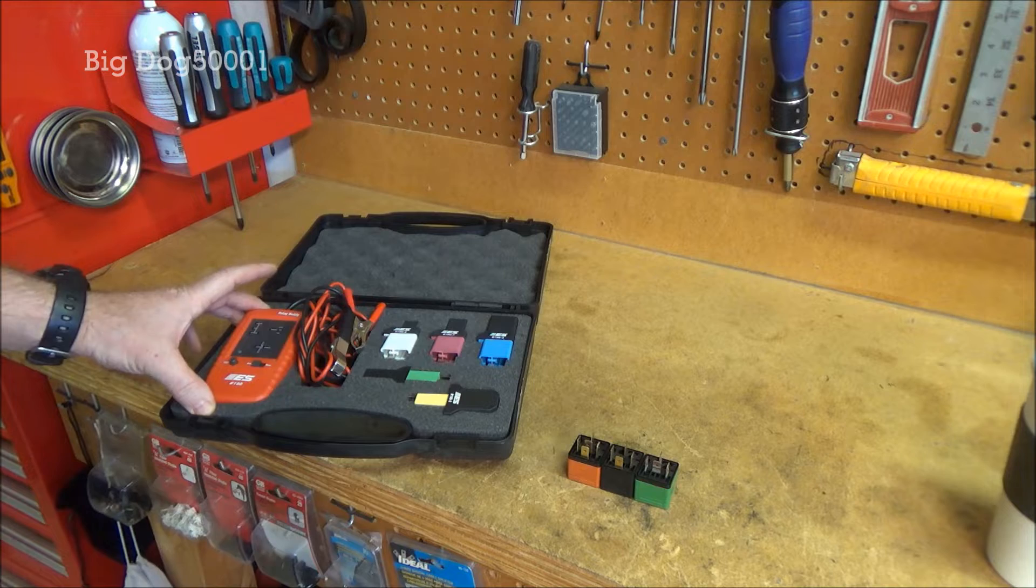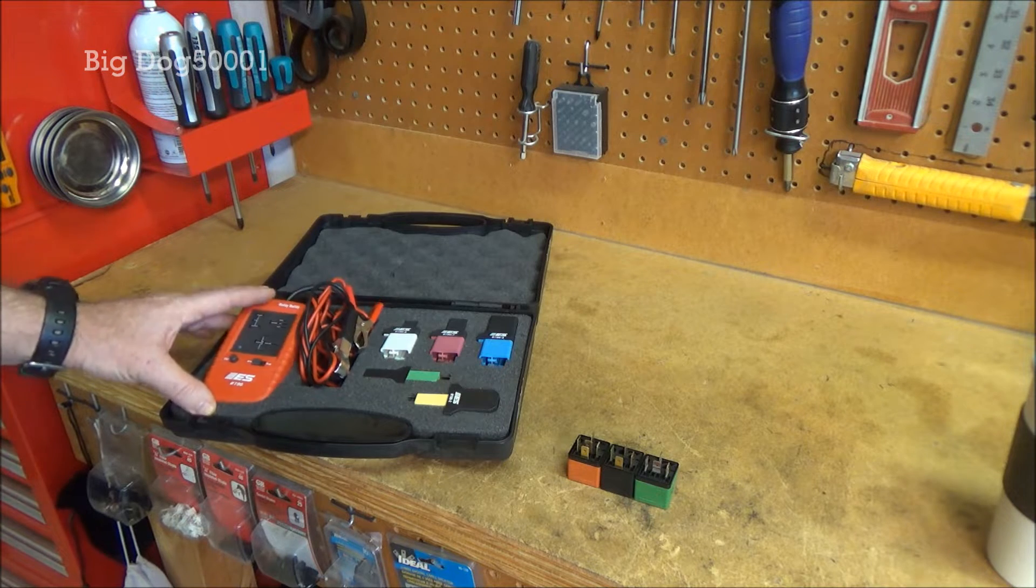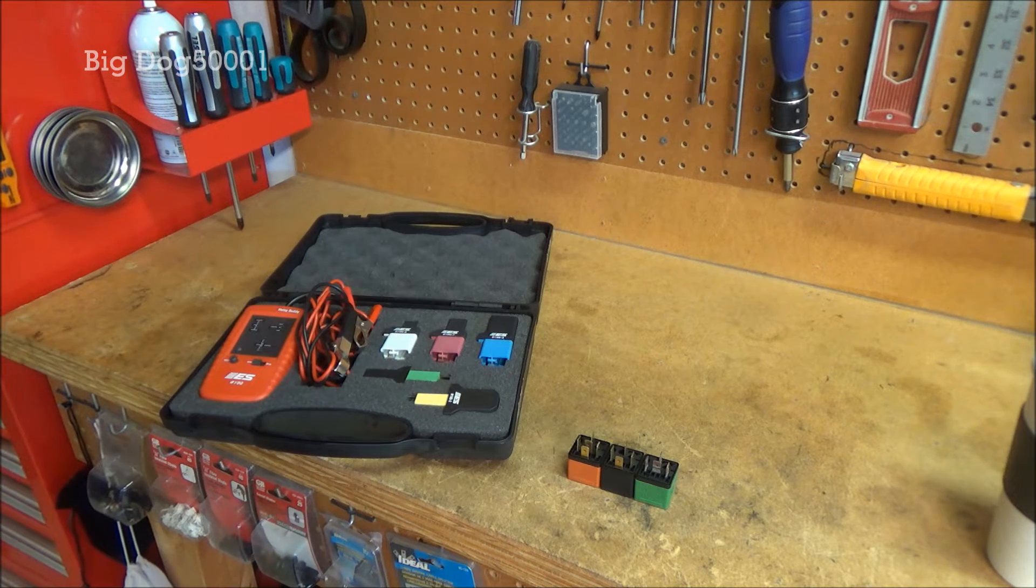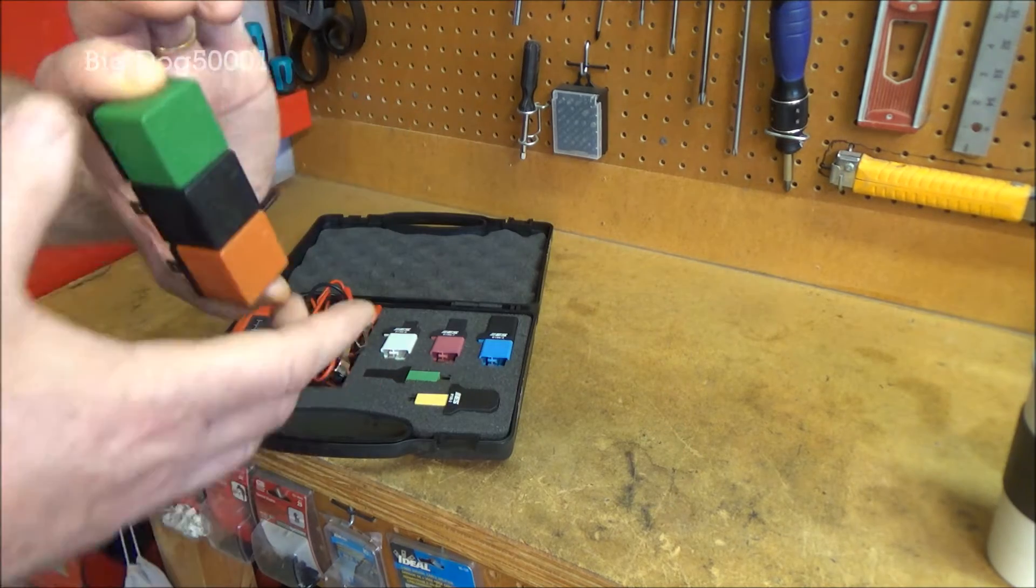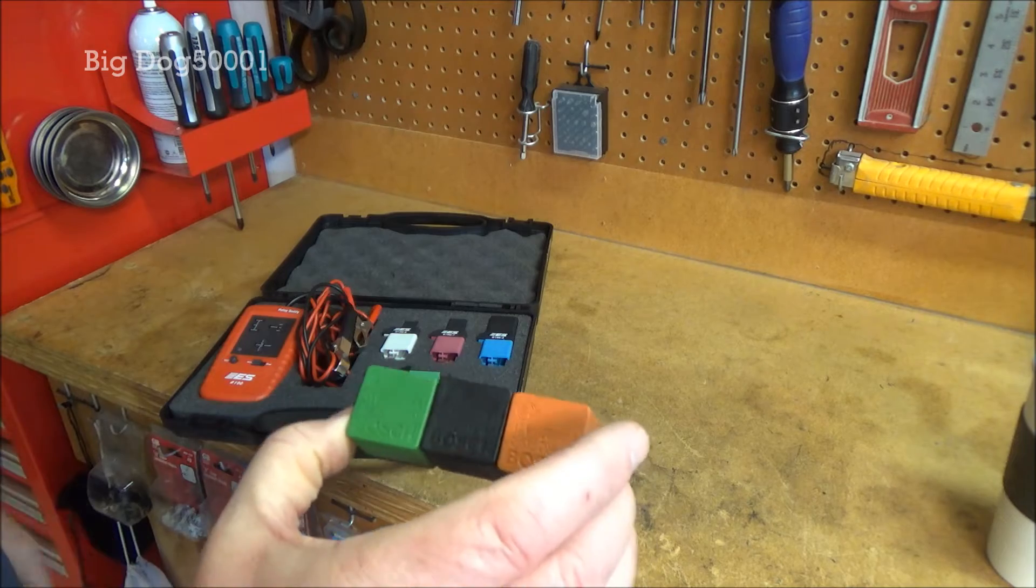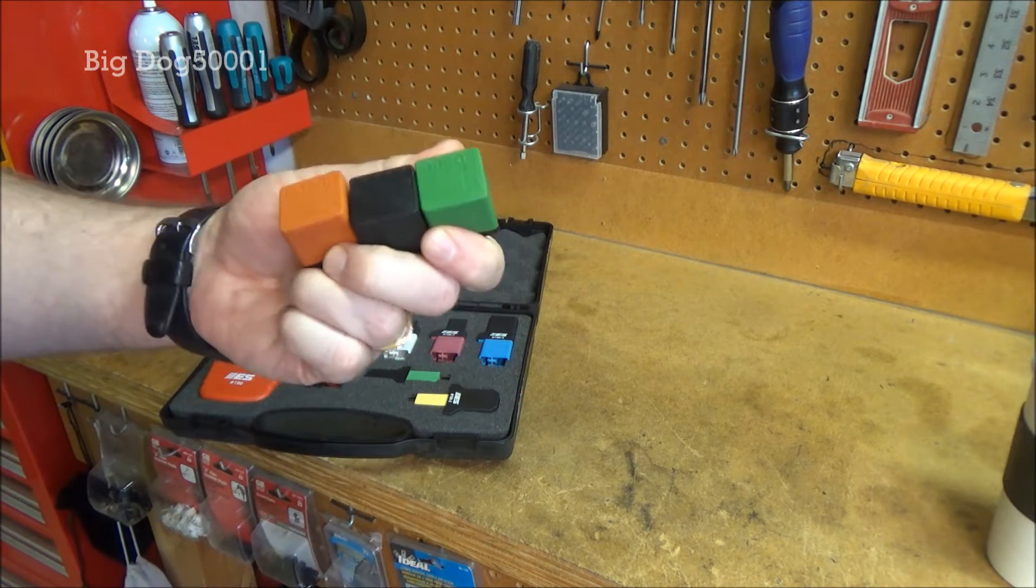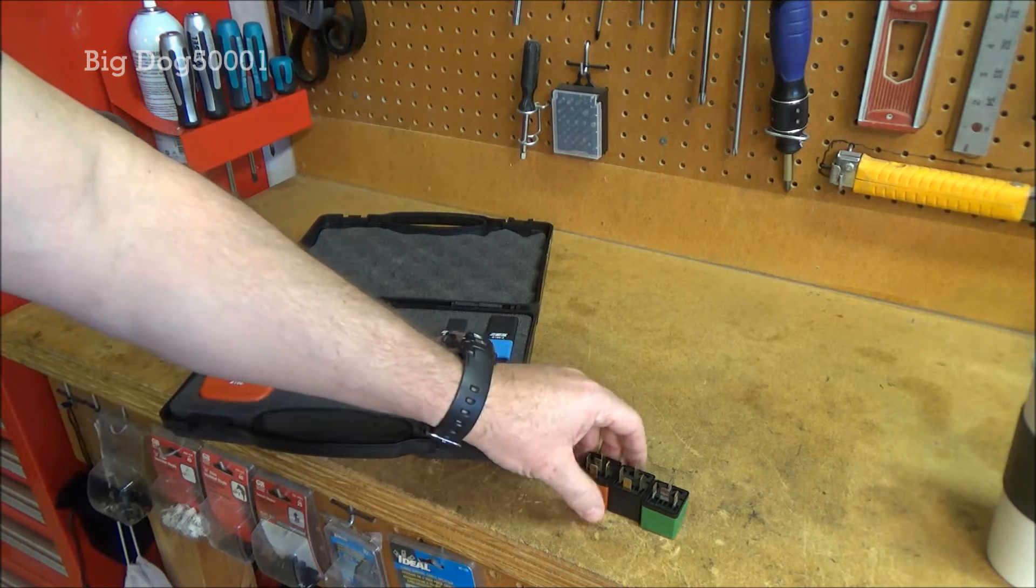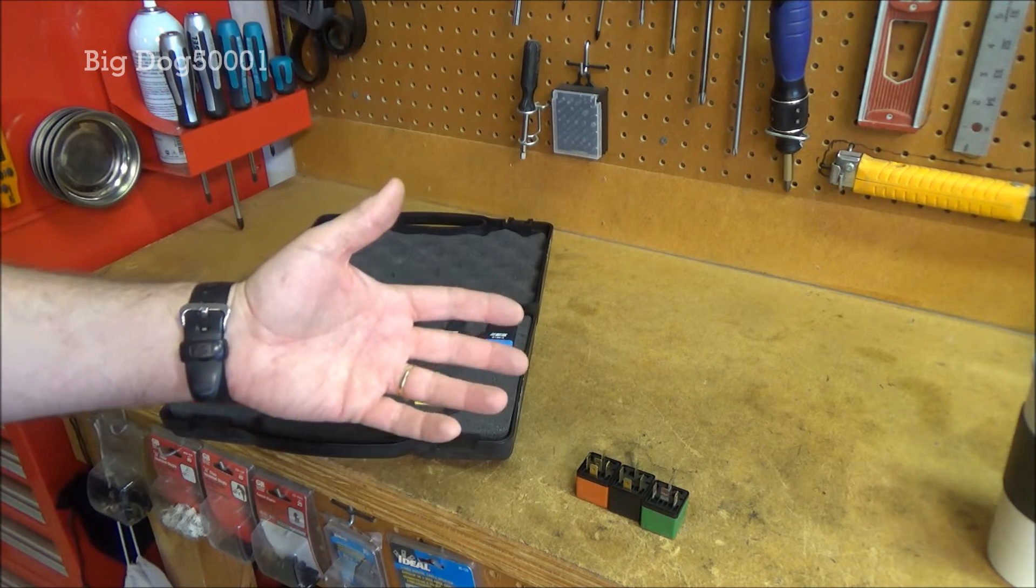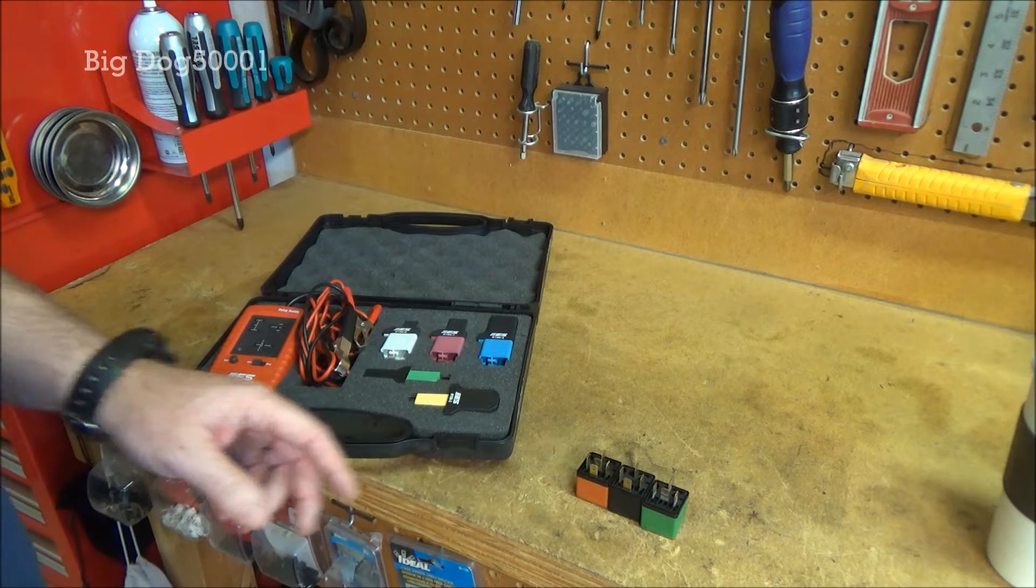It's a nice little kit and can really make testing relays pretty fast. Now, as you can see here, I have three Bosch relays. These are out of a Toyota; they're for the cooling fans. The way Toyota does it, they run the fans in series or parallel whether you want it on high or low.